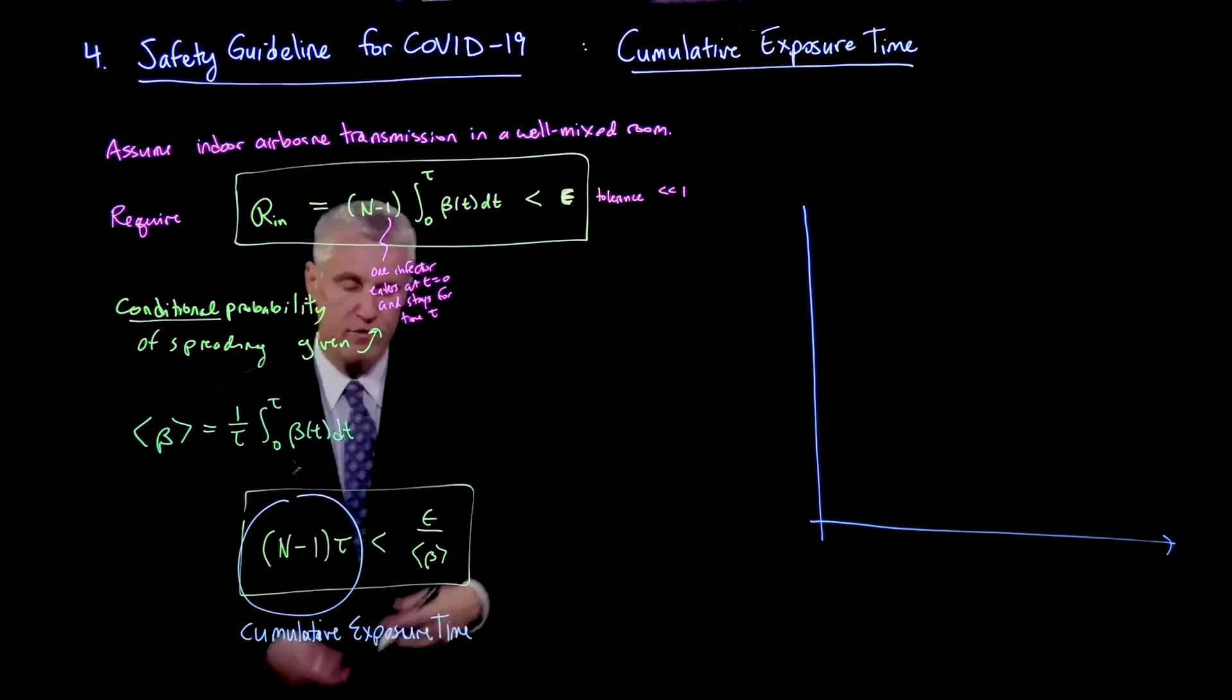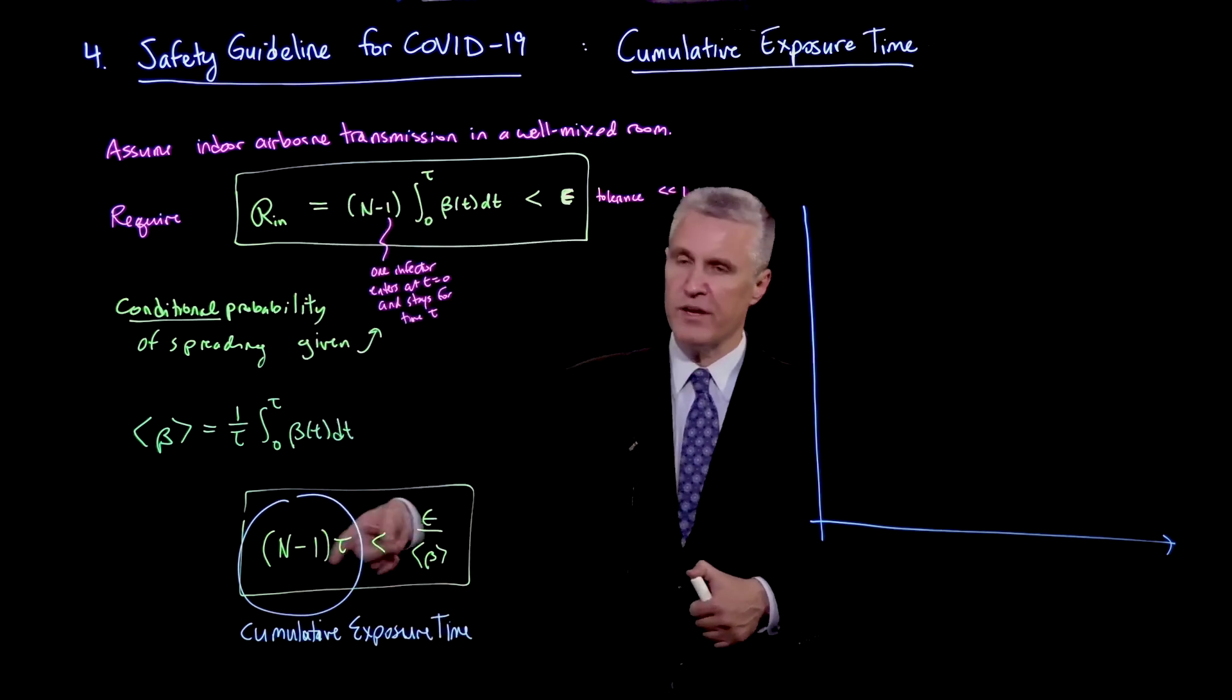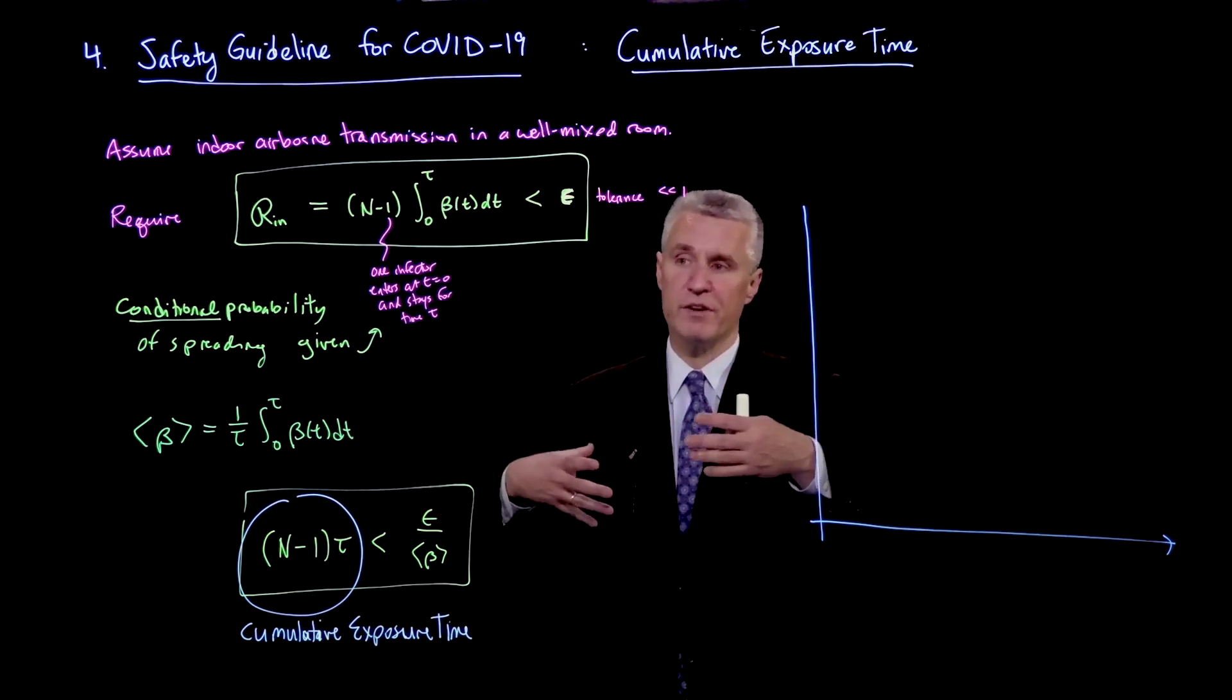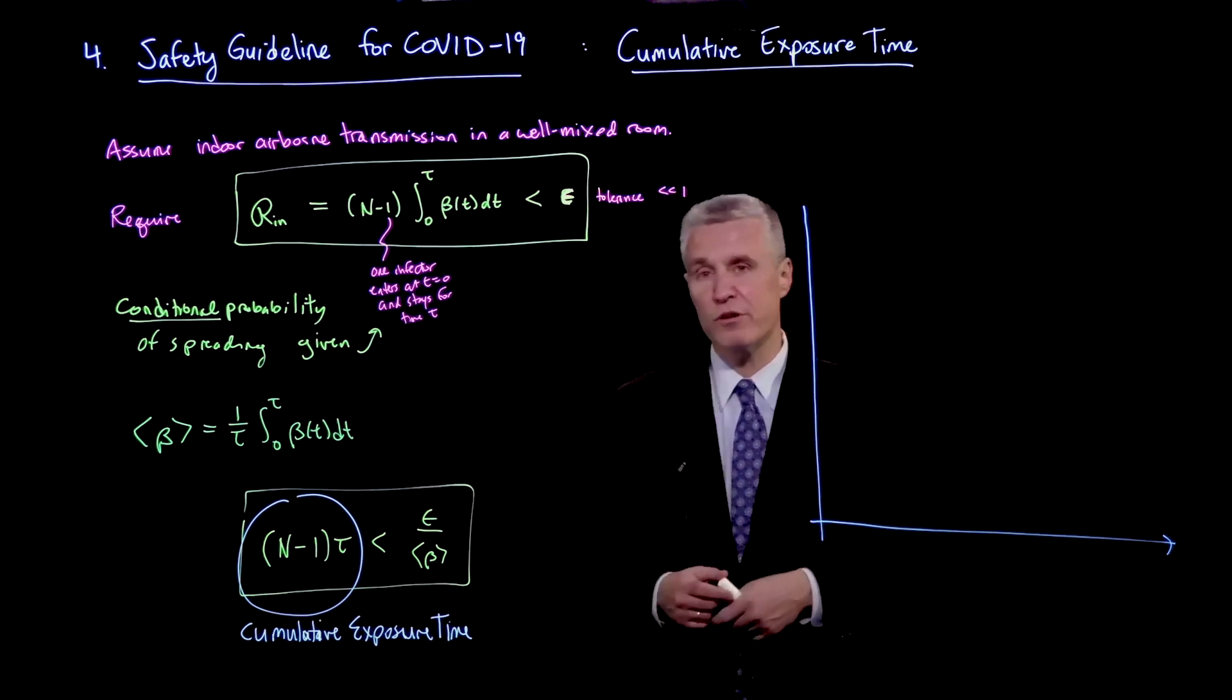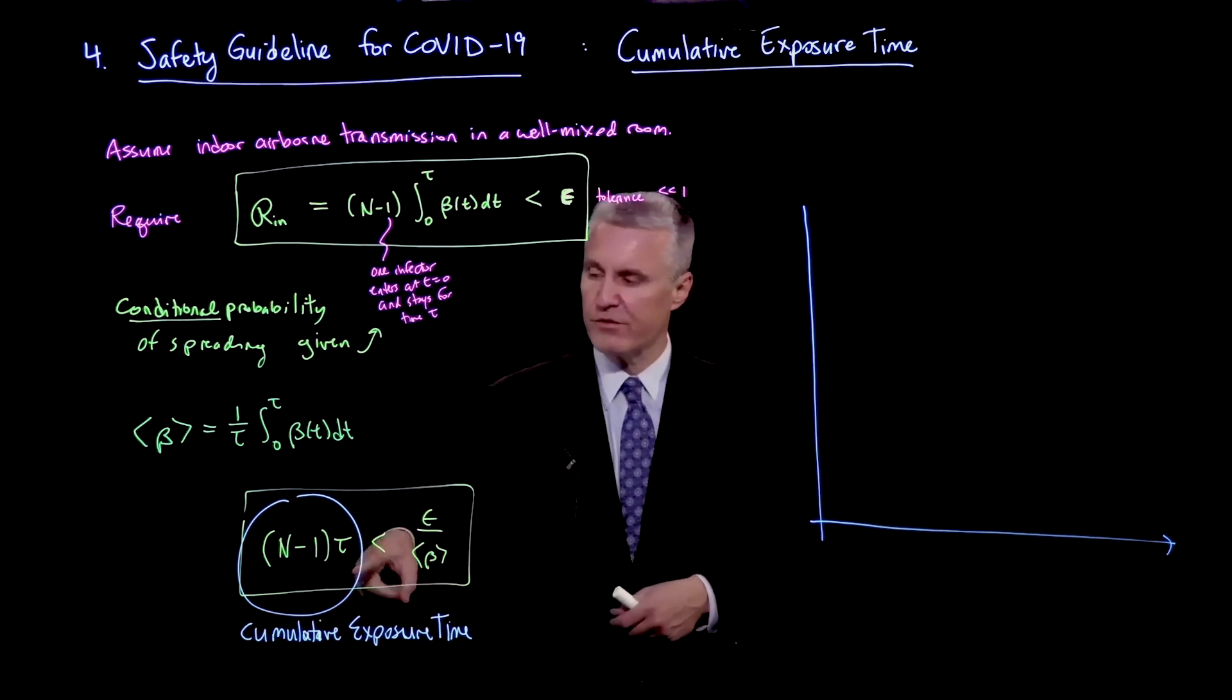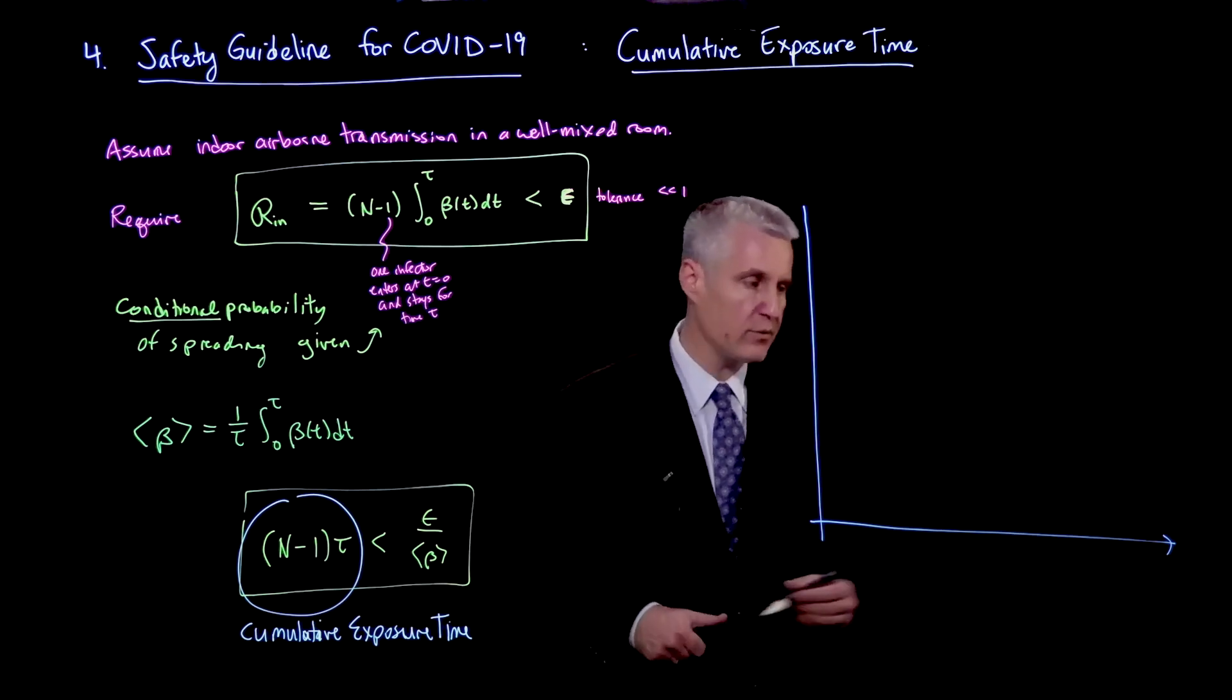So the time that you're exposed to the affected individual tau is multiplied by how many other people are in the room, because that's how many people could get infected. So the more people that there are, the more chance that one of them could be infected in a well-mixed room. And so you really don't have a bound just on time. It's really this product that's important. And so let's plot what this looks like now.